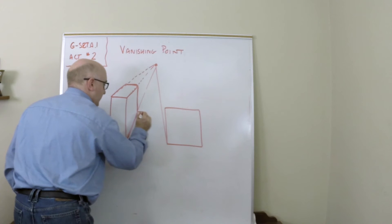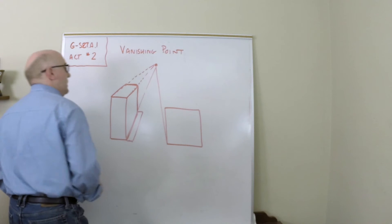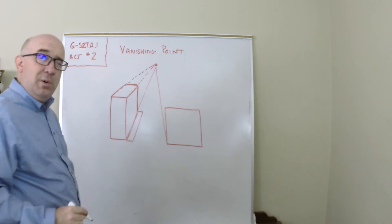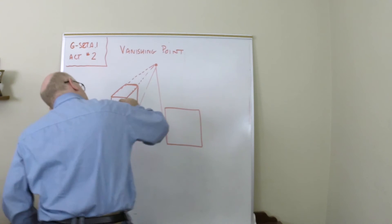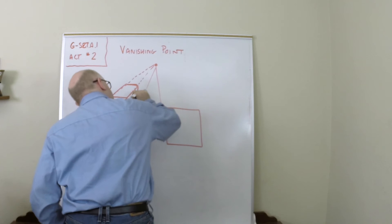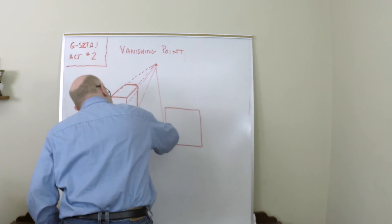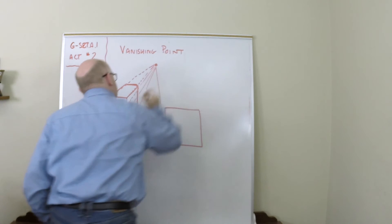Let's say I want a little sidewalk out in front of my building. Let's say I want a window in that building. Well, I would use that same vanishing point idea to keep my lines all going in the same way.